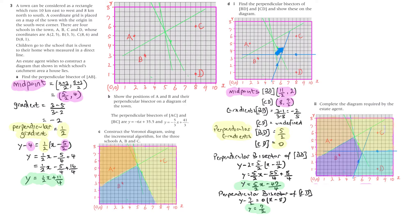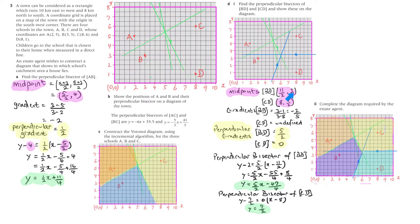BD has a positive slope, and CD will just be a horizontal line, so it should have a slope of 0. We find the midpoint — for BD that's (11/2, 2). We just average the two points: add the x-coordinate of B and the x-coordinate of D and divide by 2, same with the y-coordinates, and we've got 11/2 and 2, that's 5.5 and 2.